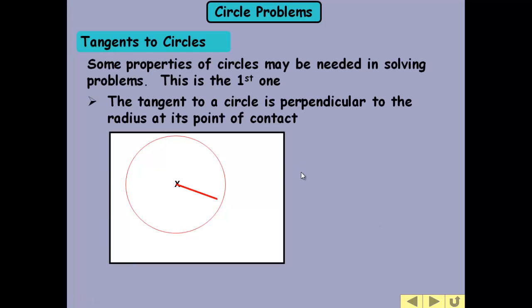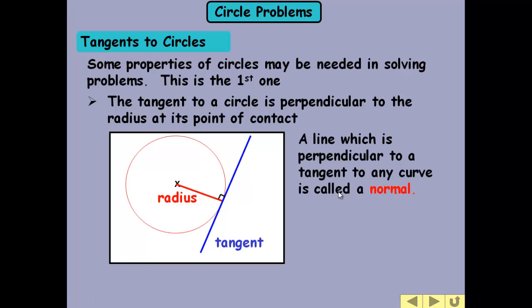If we look here we can see that any tangent to the circle, if we can remember this circle property, is going to be perpendicular to the radius. So in other words, the radius is part of the normal to the tangent.